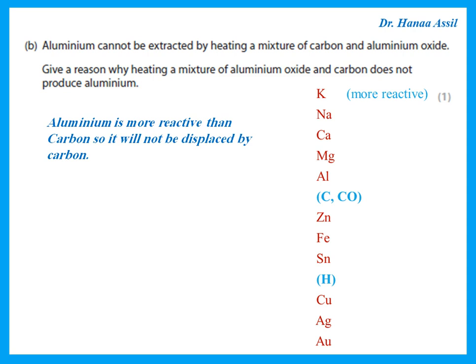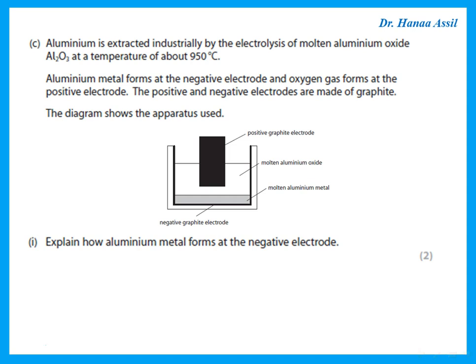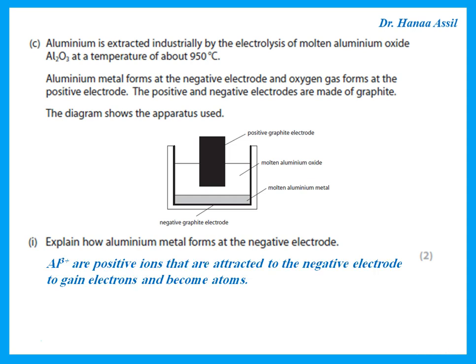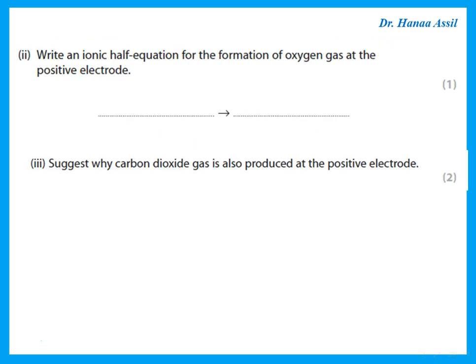Aluminium is extracted industrially by electrolysis of molten aluminium oxide. Aluminium metal forms at the negative electrode because aluminium ions are positive, so they are attracted to the negative electrode and gain electrons to become aluminium atoms. The ionic equation for oxygen gas at the positive electrode: O²⁻ ions go to the positive electrode, lose electrons, and become O₂ — remembering to balance the equation correctly.